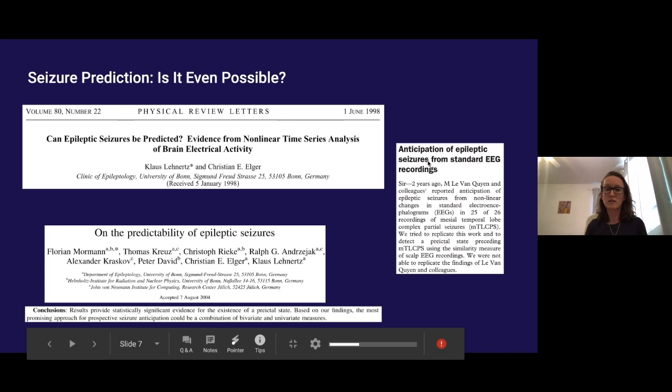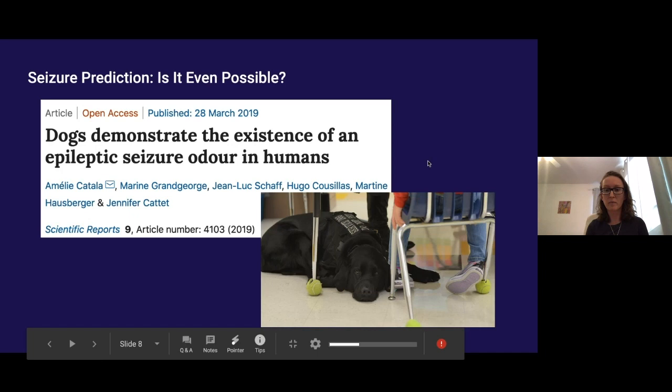Twenty years ago people were still debating whether this signal exists at all. Anecdotally for people with epilepsy it was not surprising that seizures can be predicted because some people with epilepsy have had dogs who have been able to alert them to an oncoming seizure ahead of time. It was only recently proven that this is in fact the case and that the dogs do it based on smell.